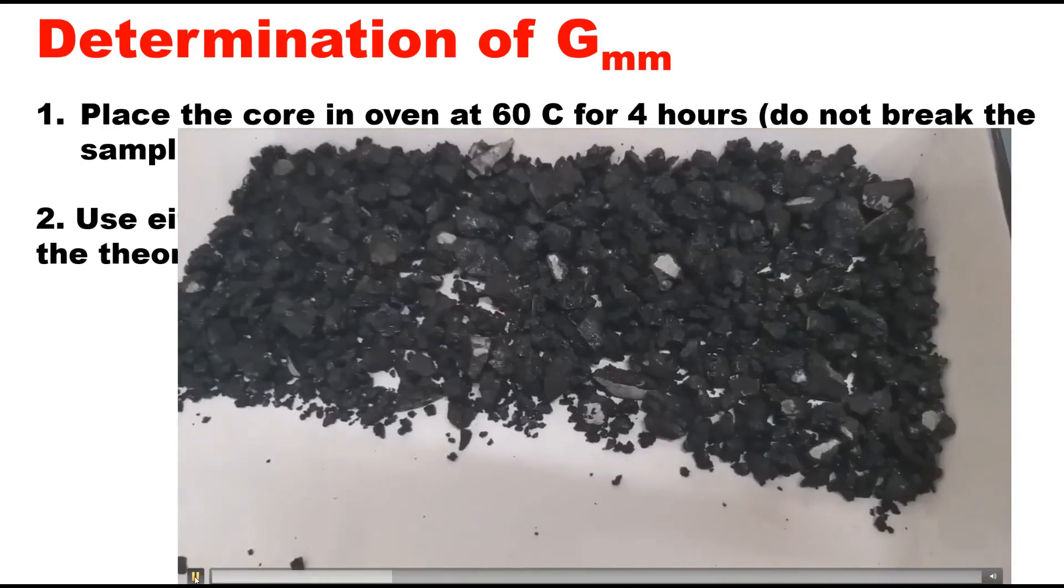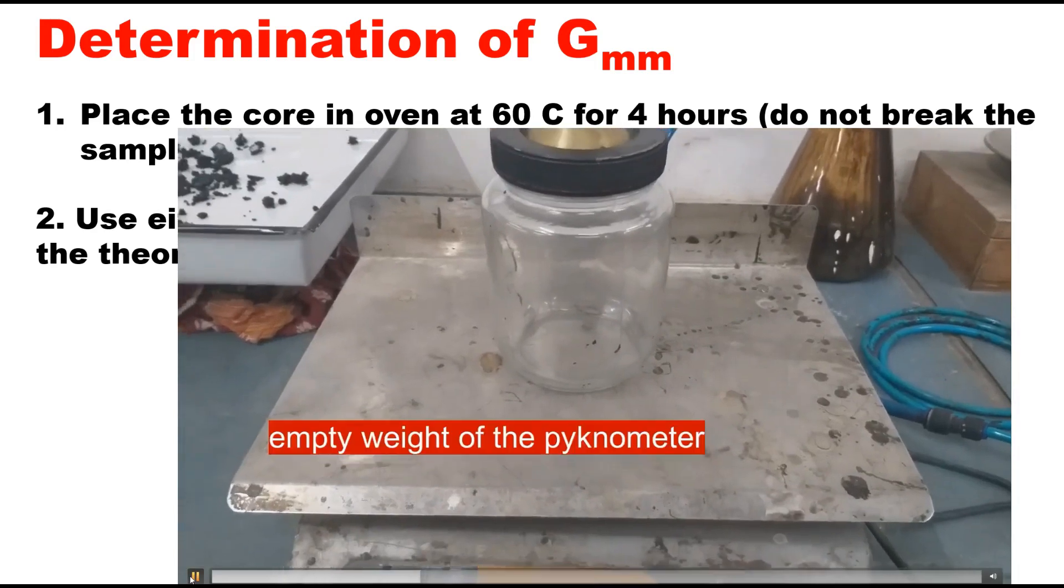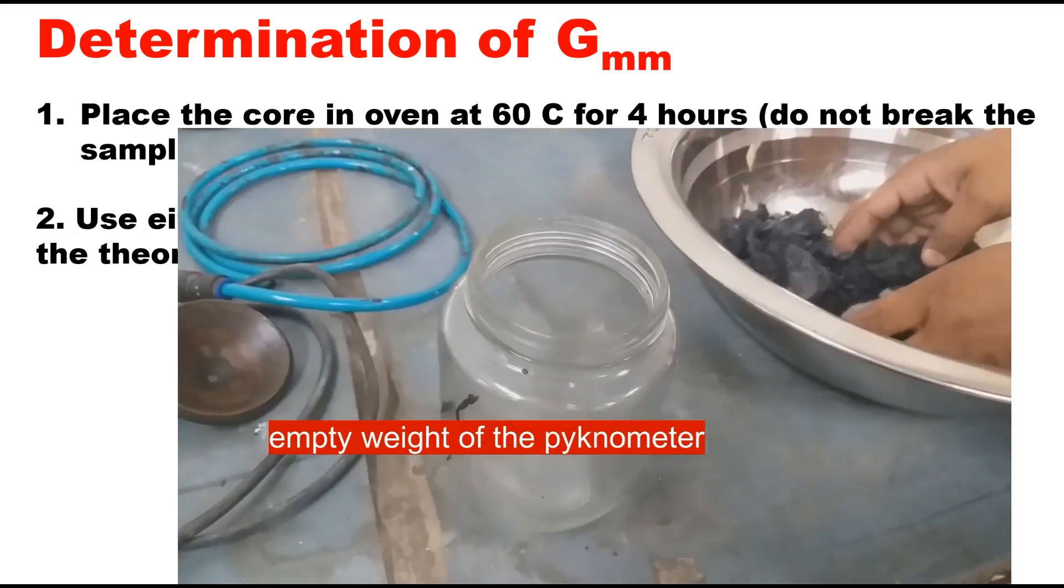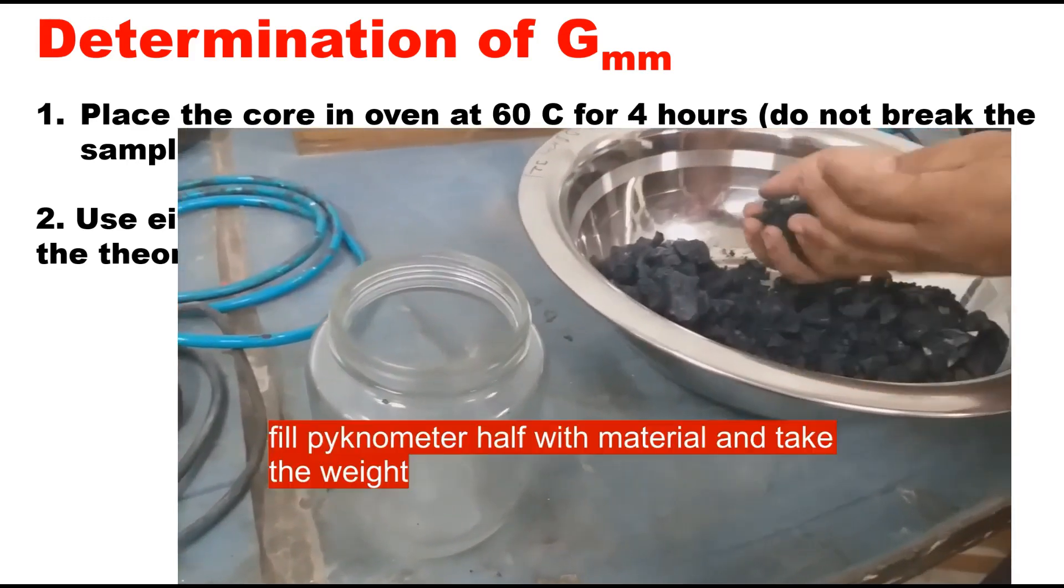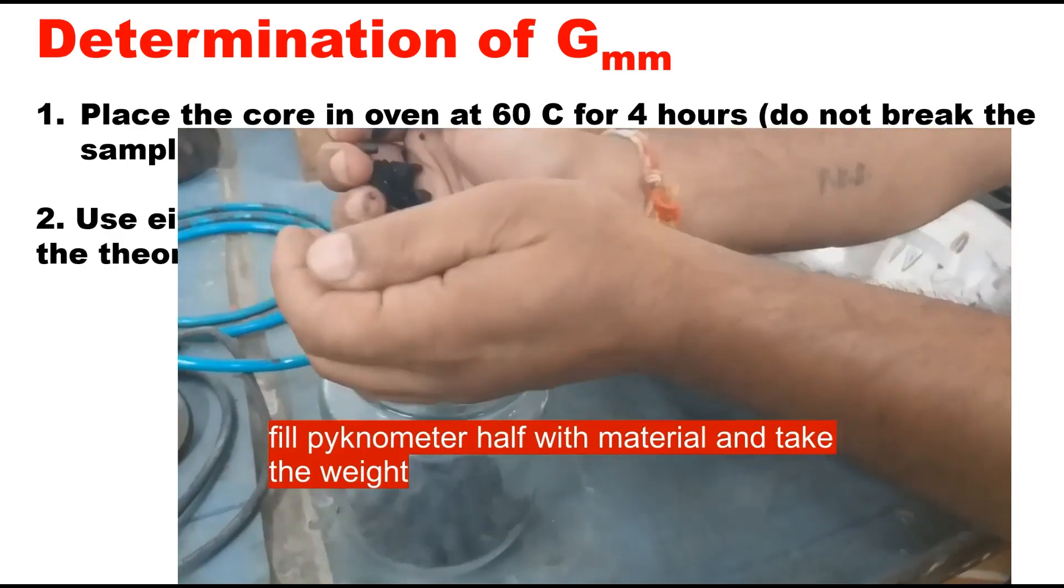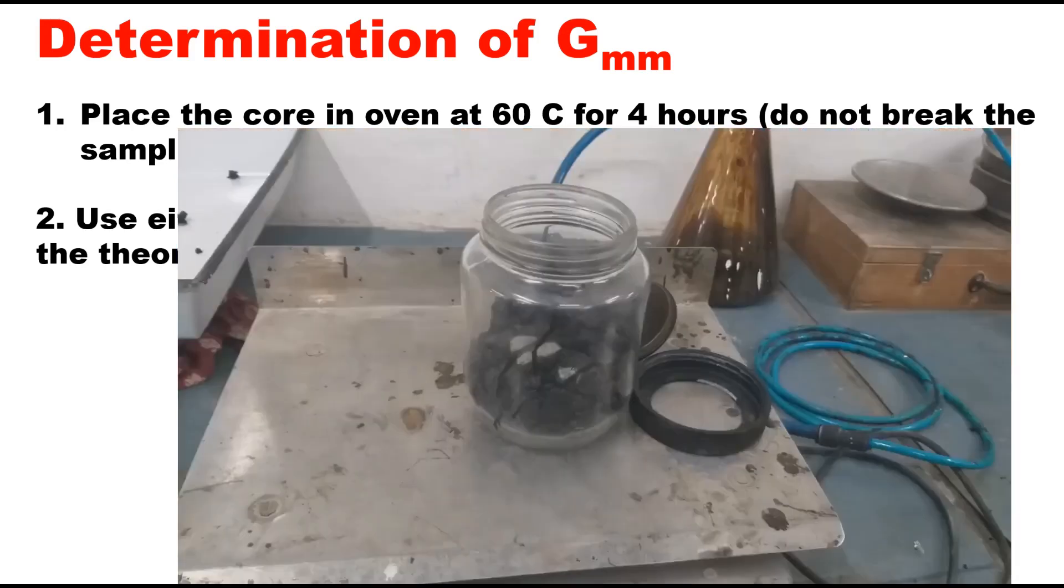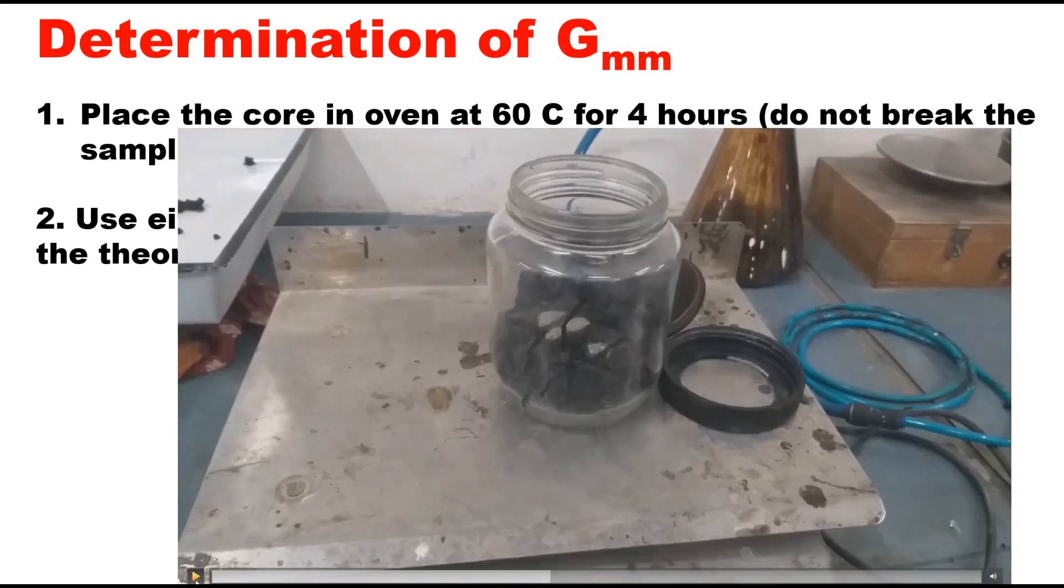Let it cool at room temperature. If you are using pycnometer method, the first step is to take the empty weight of the pycnometer with its lid as well as its cover. After that you fill the material into this pycnometer so that the depth of the material is almost half, half of the depth of the pycnometer. Then you take weight of the pycnometer plus half-filled asphalt material.